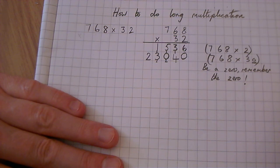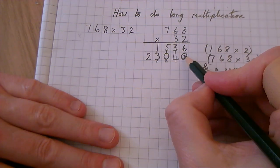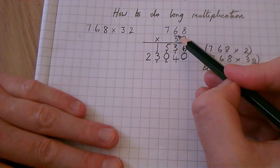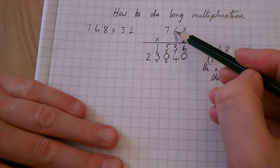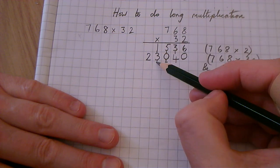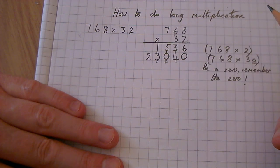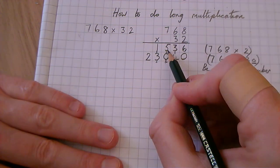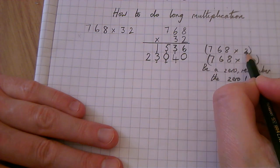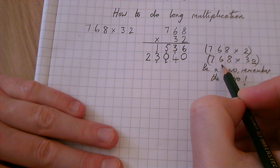So let's check that, because again, if we make a mistake here and add up, it will be wrong. We've put in our 0. 3 times 8 is 24. 3 times 6 is 18, add 2 is 20. 3 times 7 is 21, add the 2 is 23. So our answers to the first two lines are 1,536 and 23,040.